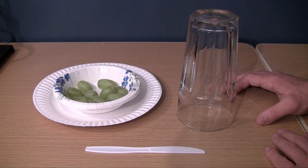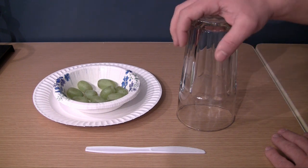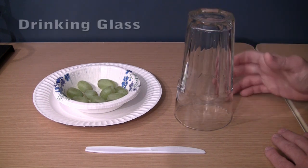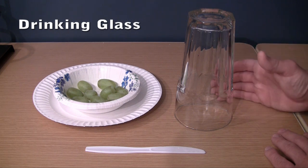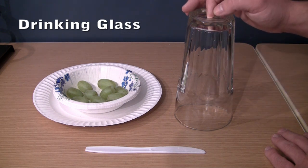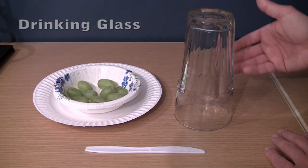So these are the supplies that we're going to be using for this experiment. The first thing that we need is a glass, and I say glass instead of cup because some cups are plastic and we're actually going to be putting this in the microwave, and if you put a plastic cup in the microwave it can of course melt.